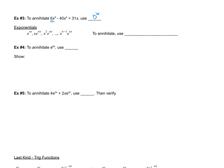Next, let's look at exponentials. To annihilate terms of the form x^(n−1)·e^(αx), we use (D − α)^n, where n accounts for the number of times the root is repeated. So e^(αx) alone means the root happened once; x·e^(αx) means it happened twice; x²·e^(αx) means three times, and so on up to n times.